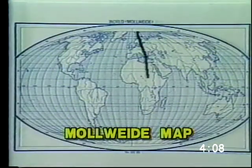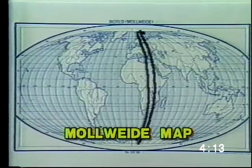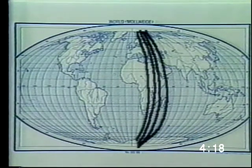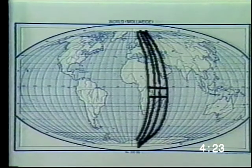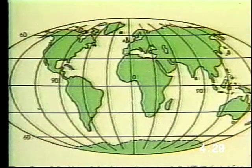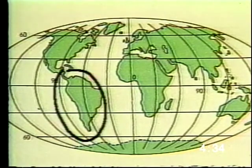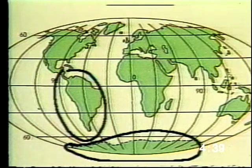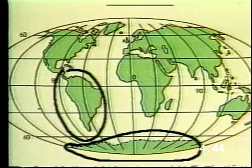A Mollweide map is an equal area map. This means that the land areas are shown correctly. On such a map, each area bordered by two parallels or lines of latitude and two meridians or lines of longitude is equal in area to any other area or block on the map. The disadvantages of this type of map are that it distorts directions, distances, and the shapes of land masses, and is therefore unfit for navigation. It is frequently used to show world distribution of various things, such as religions or languages.